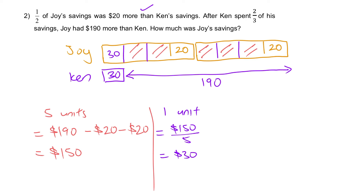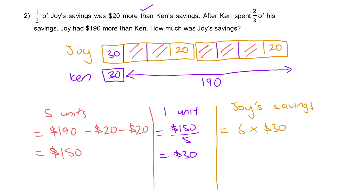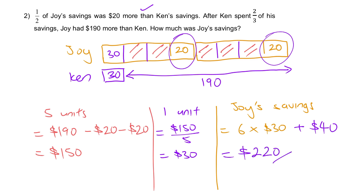Going on to the answer: how much was Joy's savings? Joy's savings is equal to six units plus this $20 plus this $20, so plus $40. That gives you $180 plus $40, which equals $220.